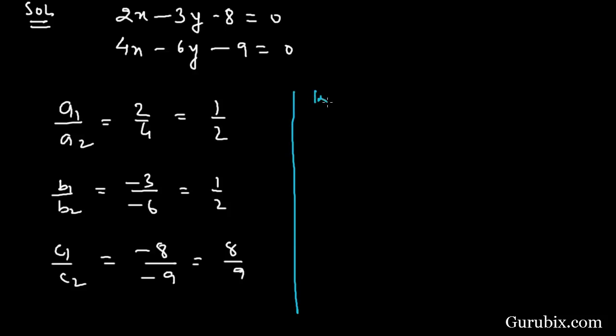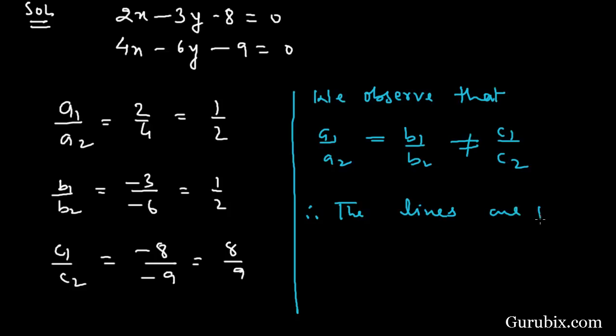Here we observe that a1 over a2 equals b1 over b2, but not equals to c1 over c2. Therefore the lines are parallel, therefore there is no solution of the pair of linear equations.